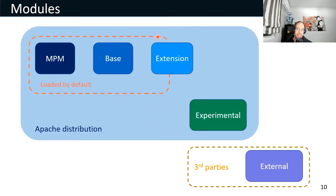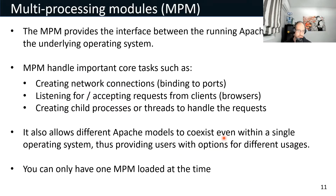Among the modules, we have five different categories. The first one is the MPM module, responsible for basic request handling and dispatching. Then we find the base modules, which are compiled and loaded by default. Then we have the extension modules, which are not normally loaded into the server except for a few cases. We also find experimental modules, which are available in the Apache kit but are not officially supported. And the last group is the external modules, not included in the Apache distribution. Only one MPM can be loaded at a time.